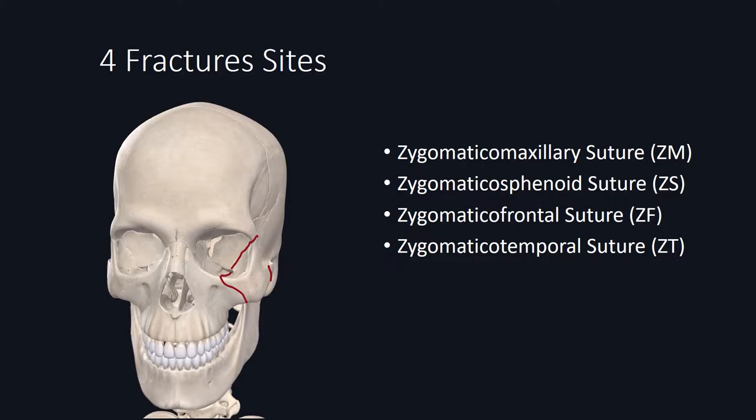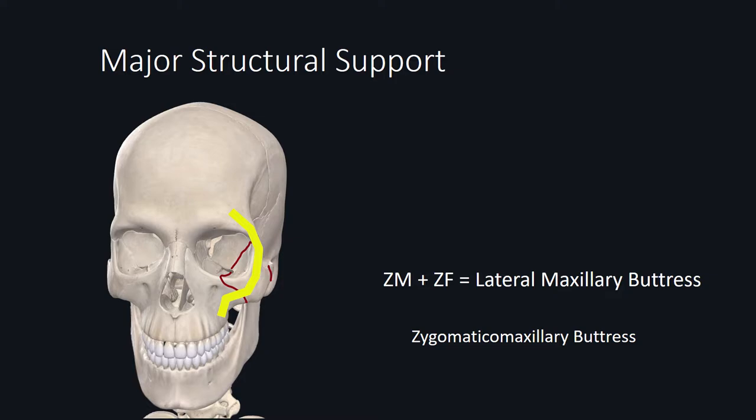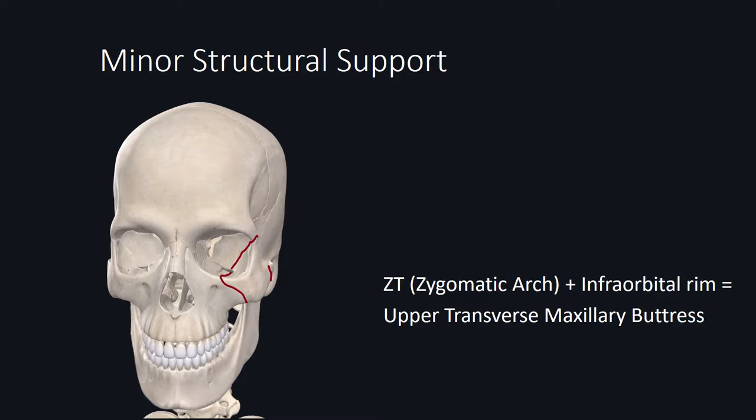Here's a typical ZMC fracture. ZMC fractures involve four suture sites: the zygomatic maxillary suture, zygomatic sphenoid suture, zygomatic frontal suture, and zygomatic temporal suture lines. The zygomatic maxillary and zygomatic frontal suture lines make up a vertically oriented major support called the lateral maxillary buttress, also commonly referred to as the zygomatic maxillary buttress. One of the goals with the repair is to restore structural support to the face by repairing the lateral buttress.